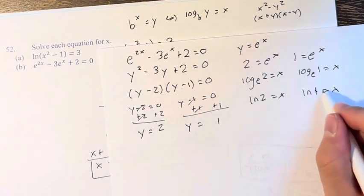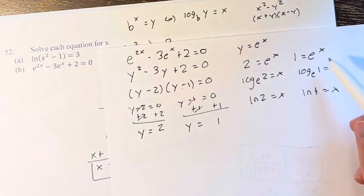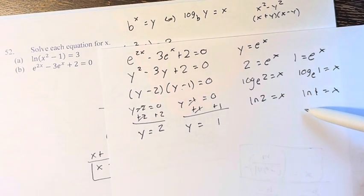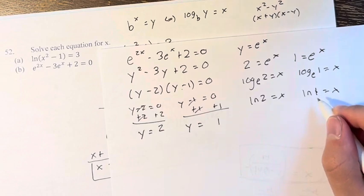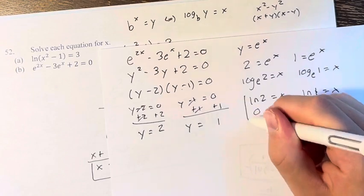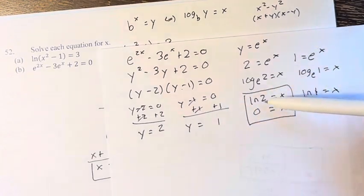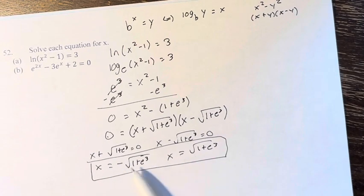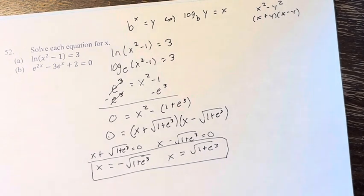And the natural log of 1 or any log base of 1 is 0 because any number to the 0th power equals 1. So therefore, this is just 0. So either x equals ln of 2 or x equals 0. This is the solution for b. And x equals positive or negative the square root of 1 plus e cubed is the solution for a.